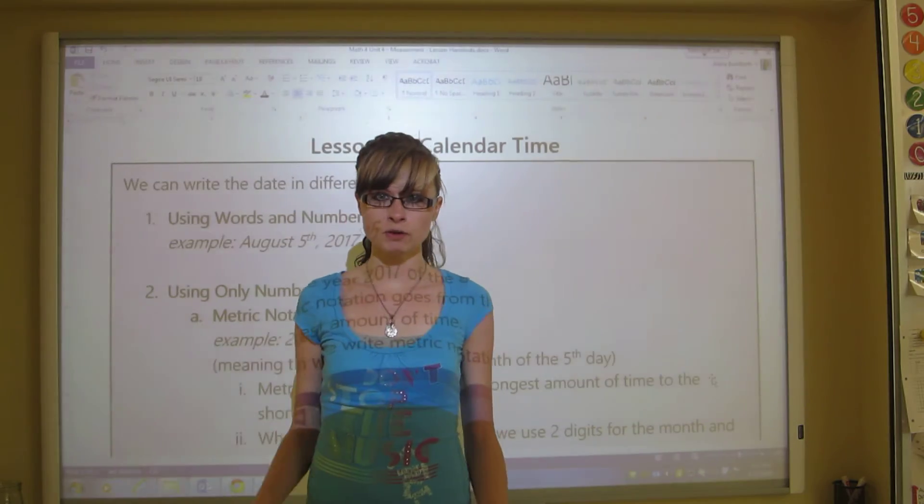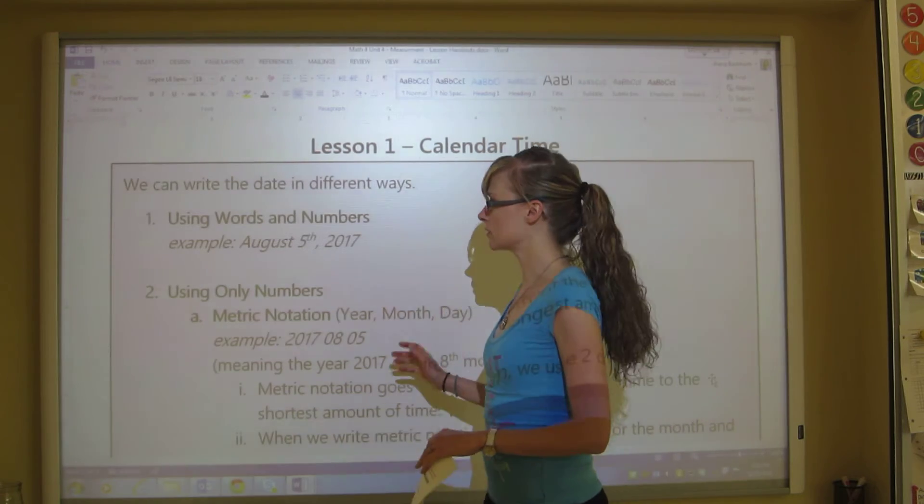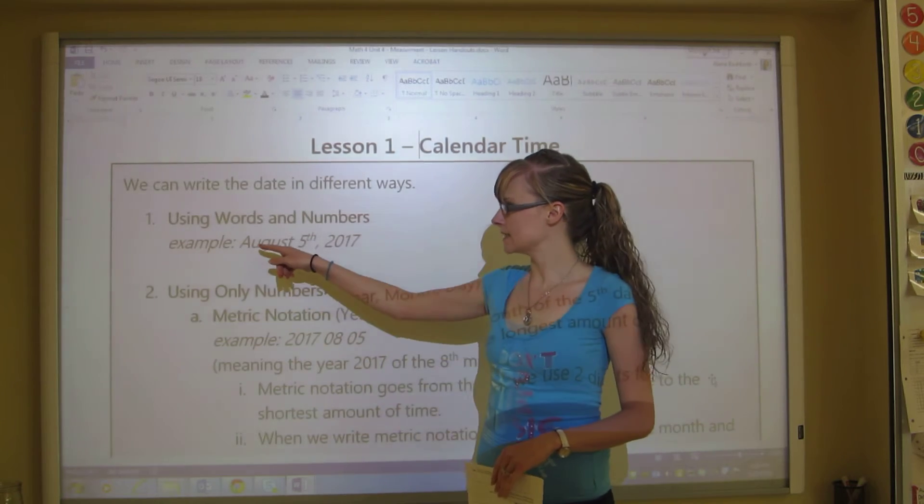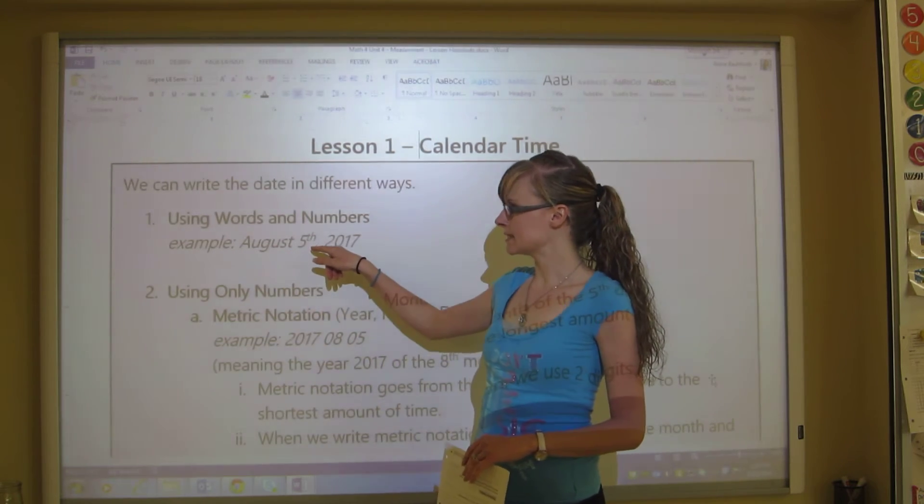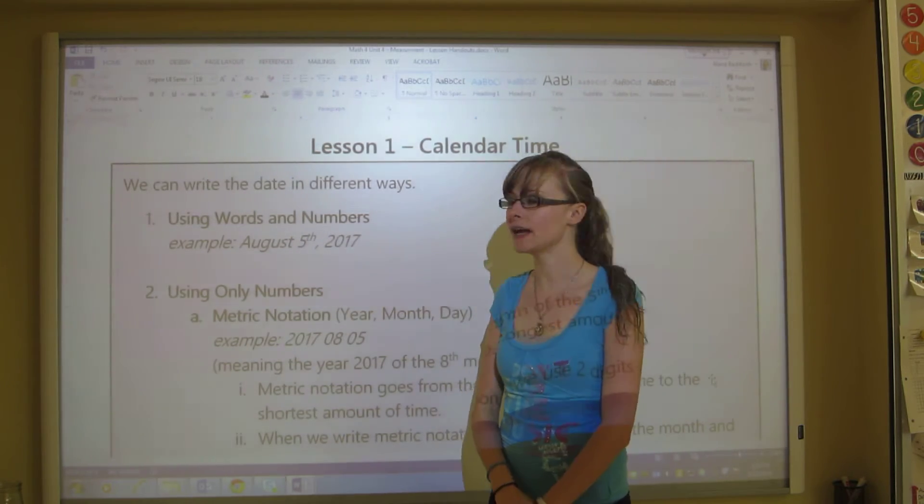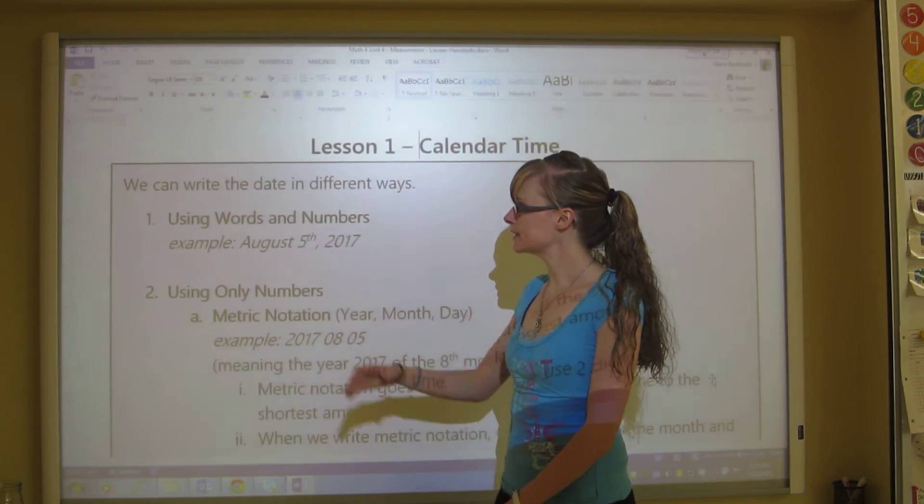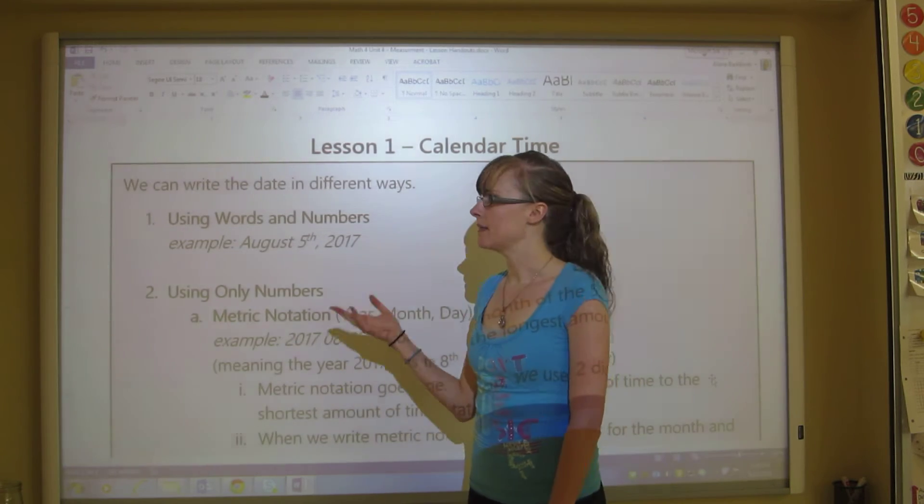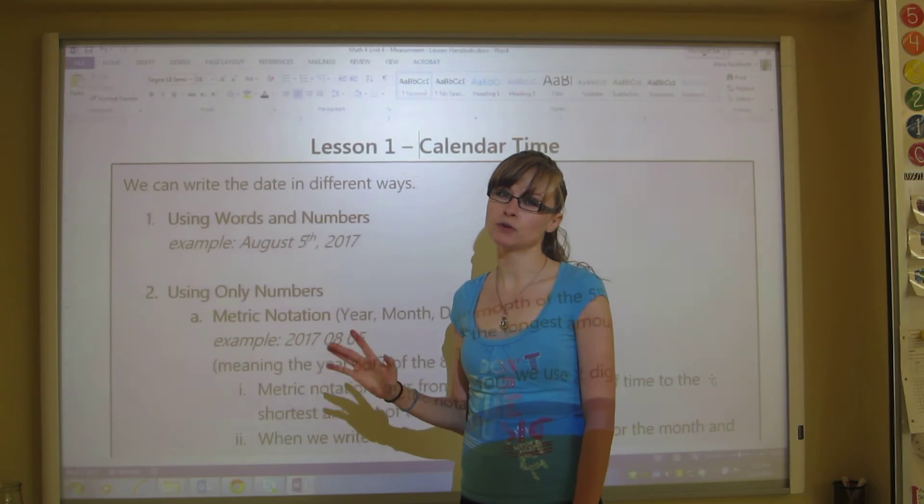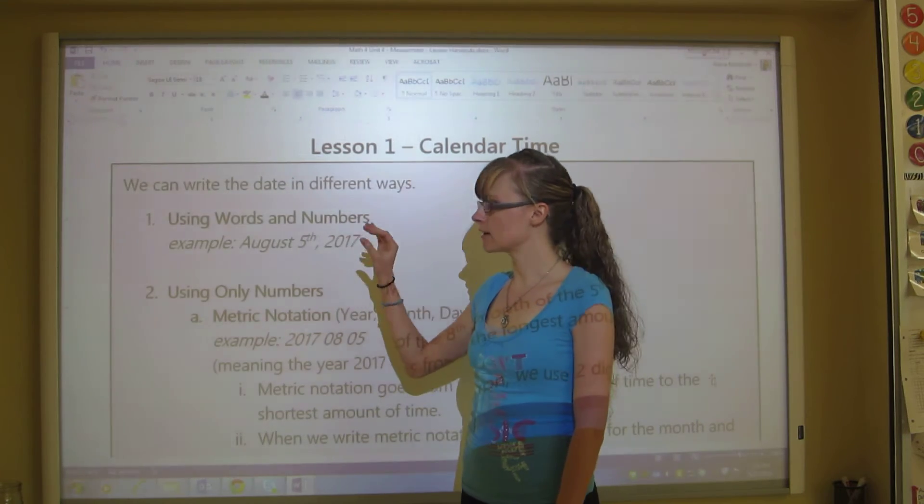Now there's the way that we normally write the date in the classroom and that's using words and numbers. We use both of those on a regular basis and the way that it looks in proper form is this. It has the month and then it has the date with the th and then it has the year at the end and in between the date and the year is a comma. So we're just focusing on month, day and year.